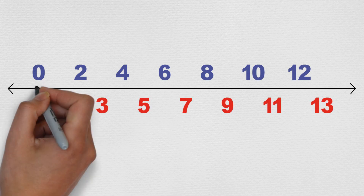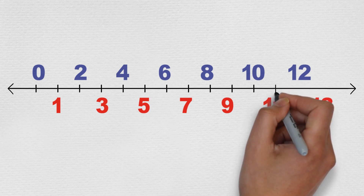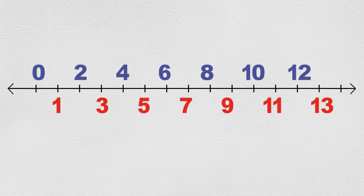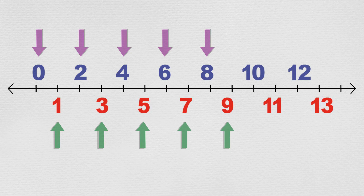We can show these numbers on a number line. We stopped at 13, but both the even and odd numbers go forever. Amazingly, all the millions of even numbers end in 0, 2, 4, or 8. And all the millions of odd numbers end in 1, 3, 5, 7, or 9. That pattern of numbers repeats forever.